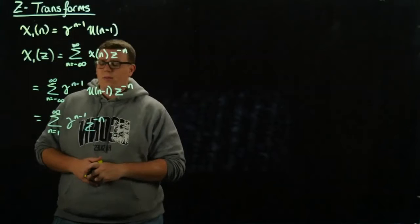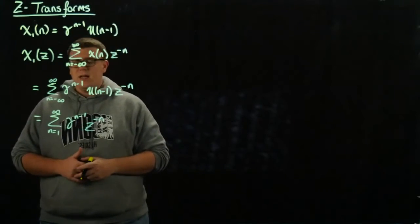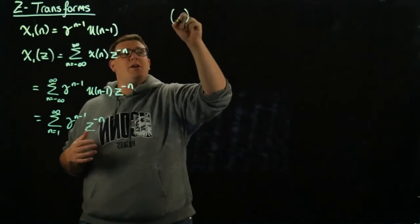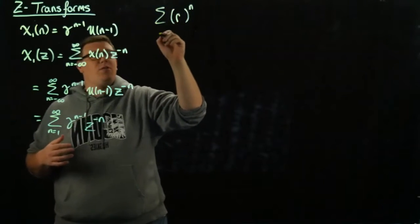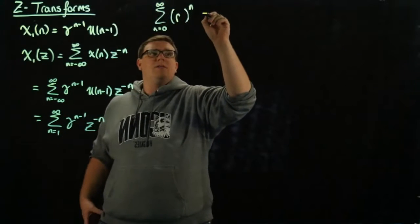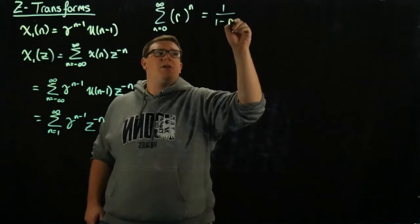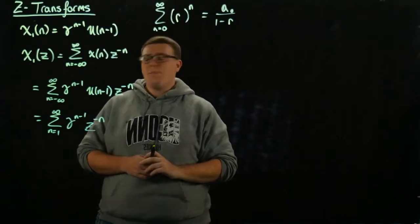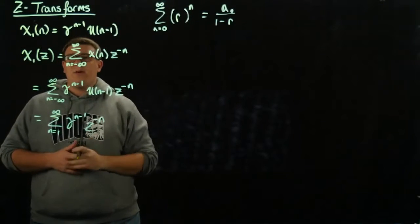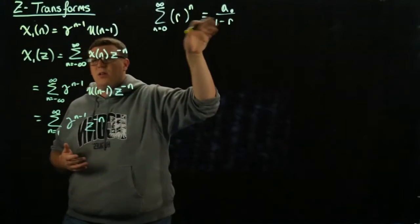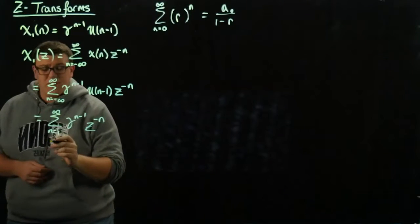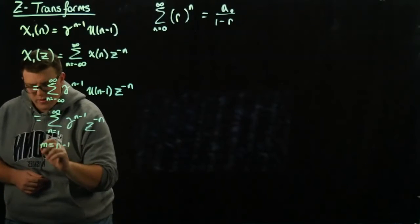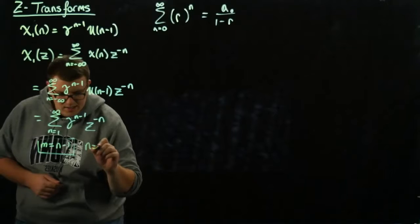We need to get this into a geometric series form. We know the summation from n equals 0 to infinity of a common ratio to the n equals 1 over 1 minus the common ratio (when the first term is 1). To get there, we do a change of variable: let m equal n minus 1, or equivalently n equals m plus 1.